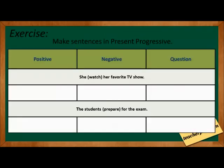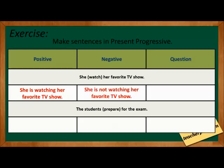For our exercise, make sentences in present progressive. The first one: She watched her favorite TV show. The verb is watch. The correct positive statement is: She is watching her favorite TV show. The negative sentence is: She is not watching her favorite TV show. And the question is: Is she watching her favorite TV show?